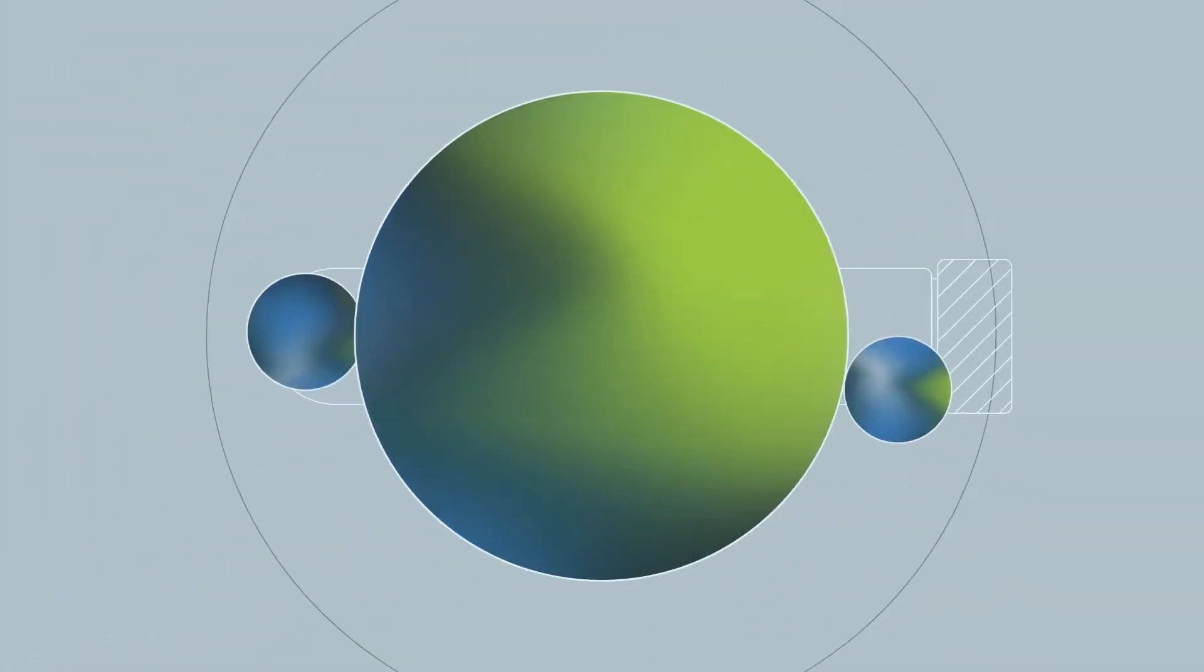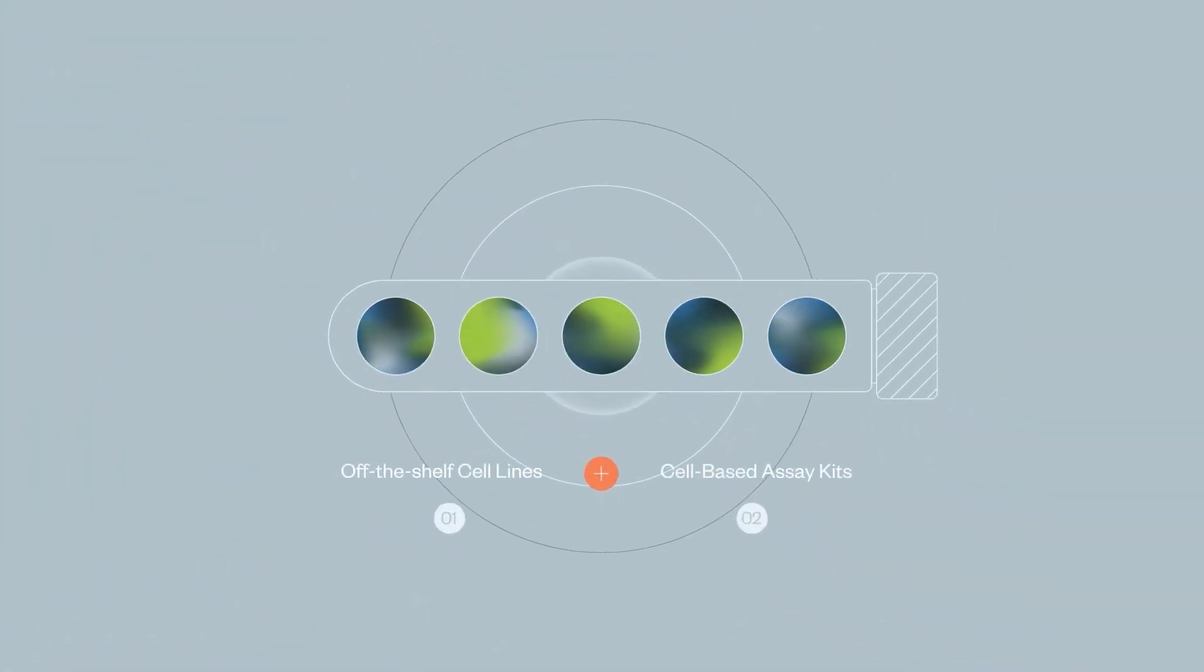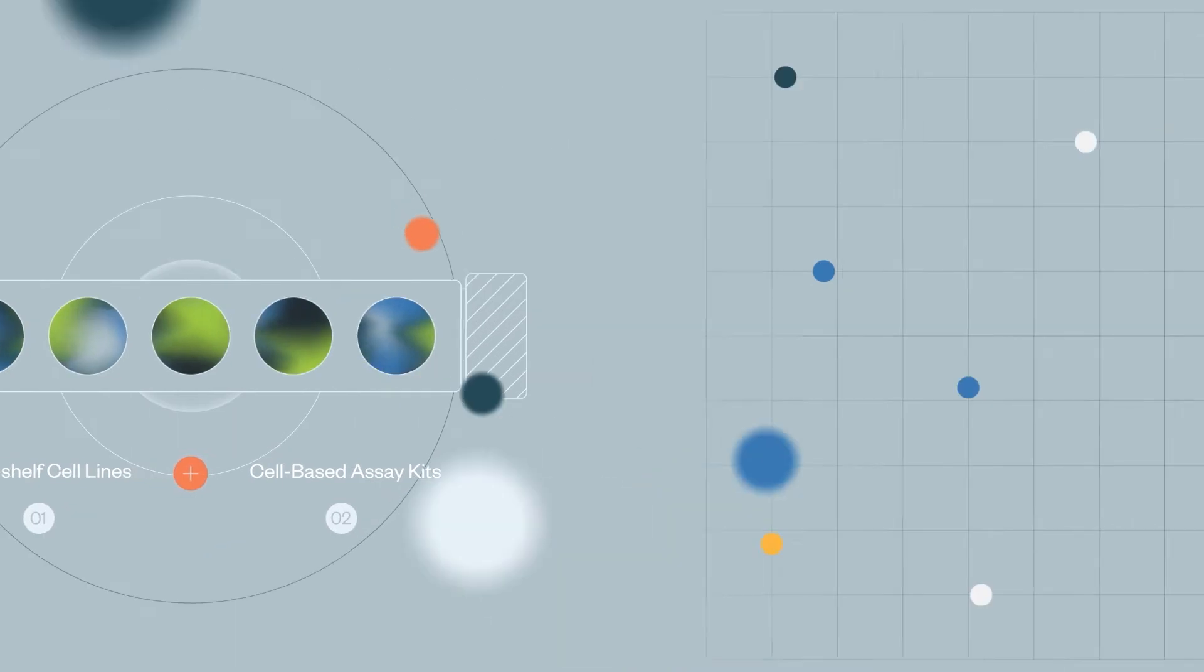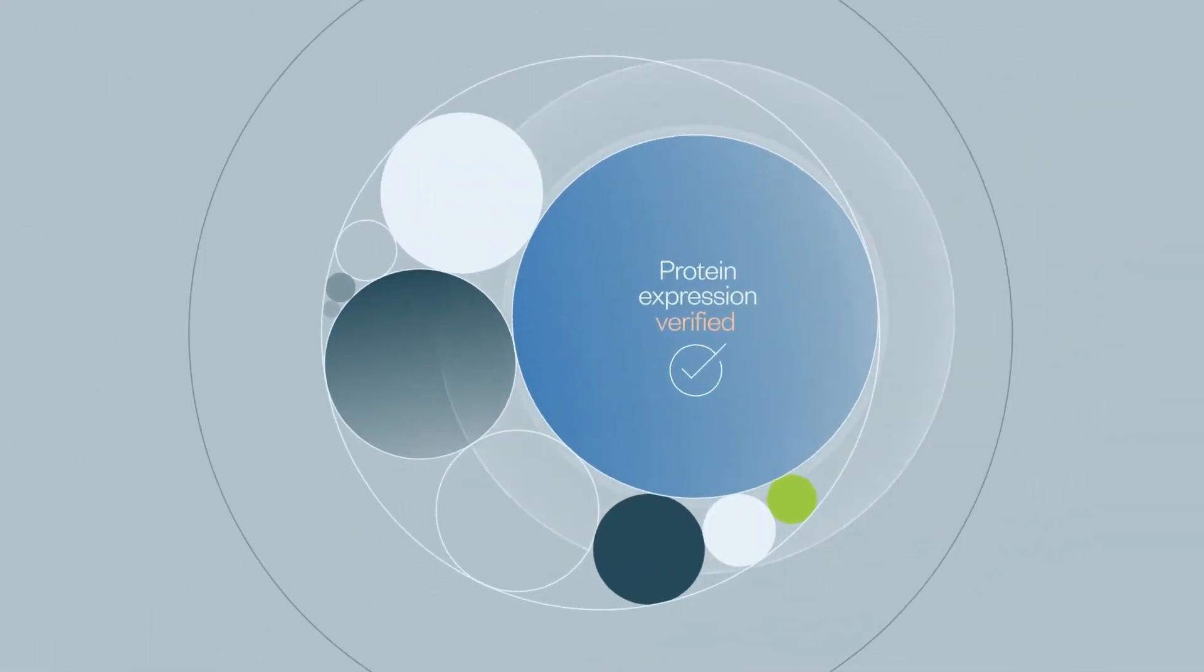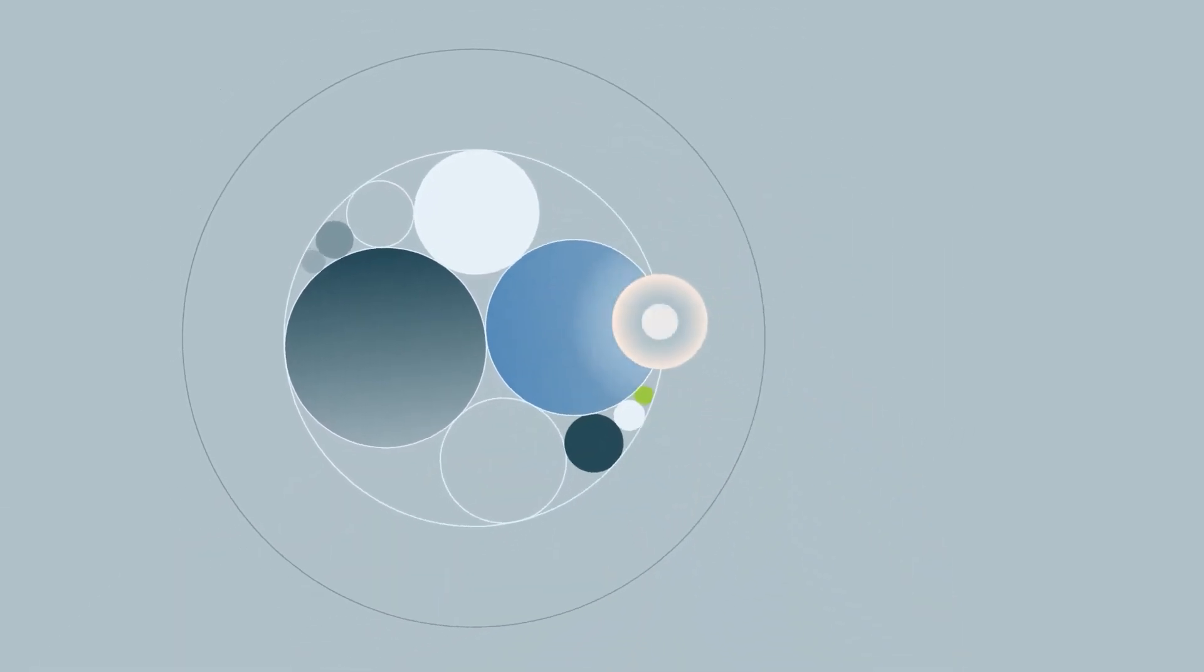BPS Bioscience produces off-the-shelf cell lines and cell-based assay kits, as well as custom cell line development all in-house. This includes verification of expression of knockouts and knock-ins, and functional assays.